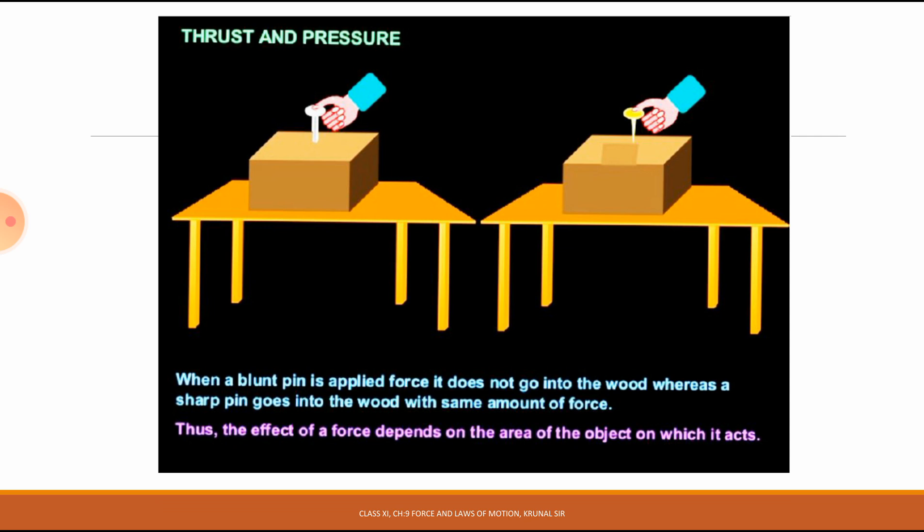For understanding of thrust and pressure, I have one example. Here, in the first figure, you saw that a pin whose nail is not a sharp one is applied, and in the second figure, a sharp pin is applied on the wood box. When a blunt pin is applied force, it does not go into the wood, whereas a sharp pin goes into the wood with the same amount of force.